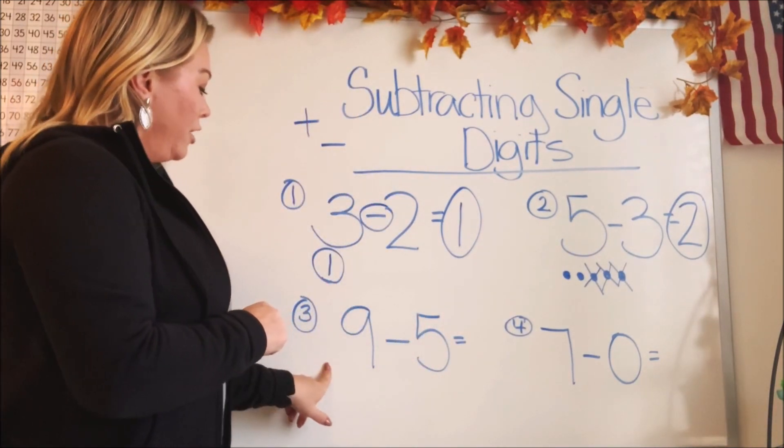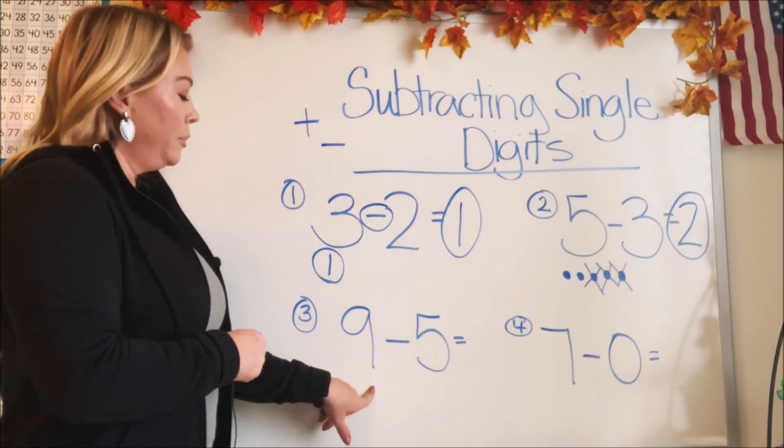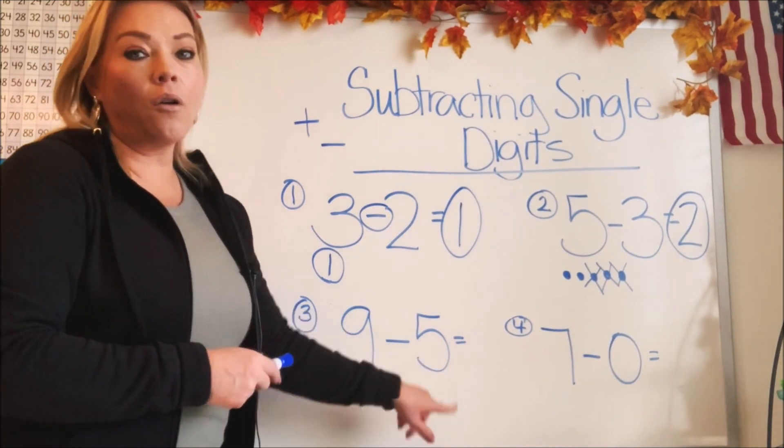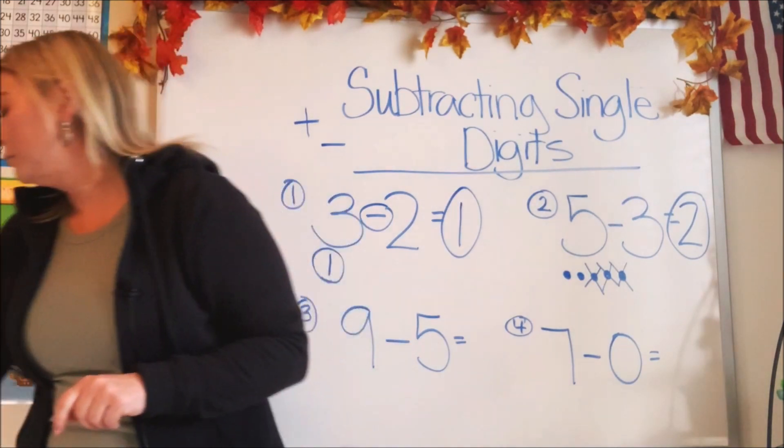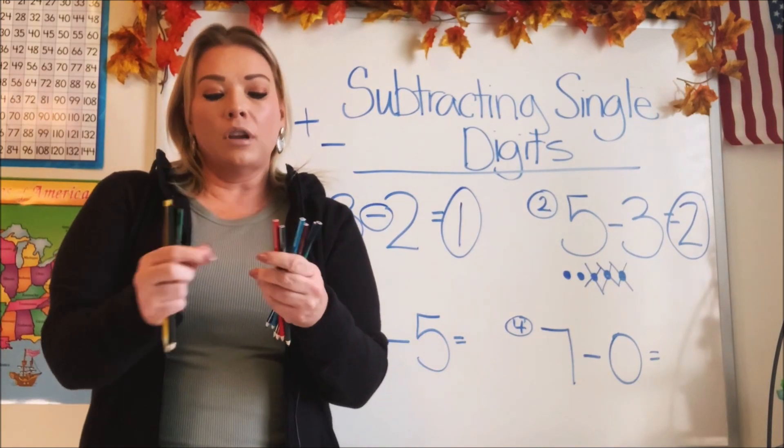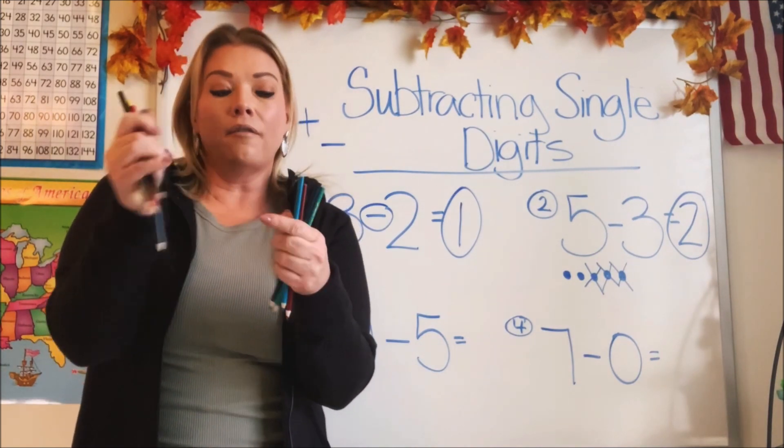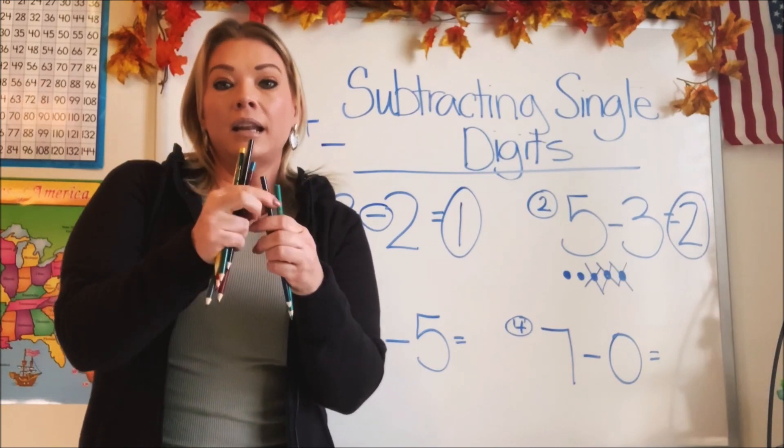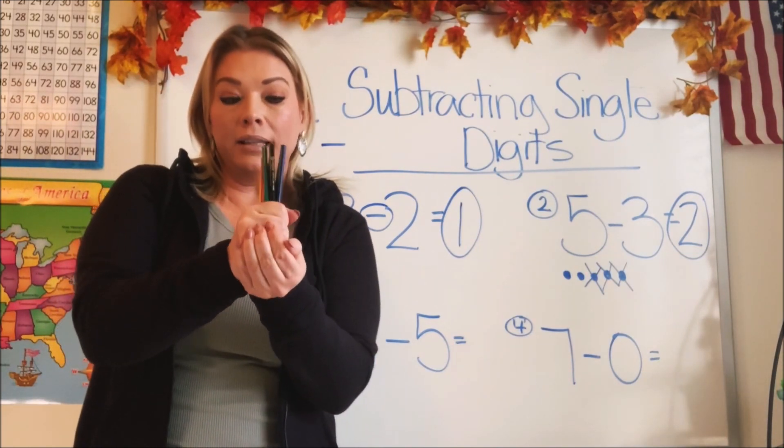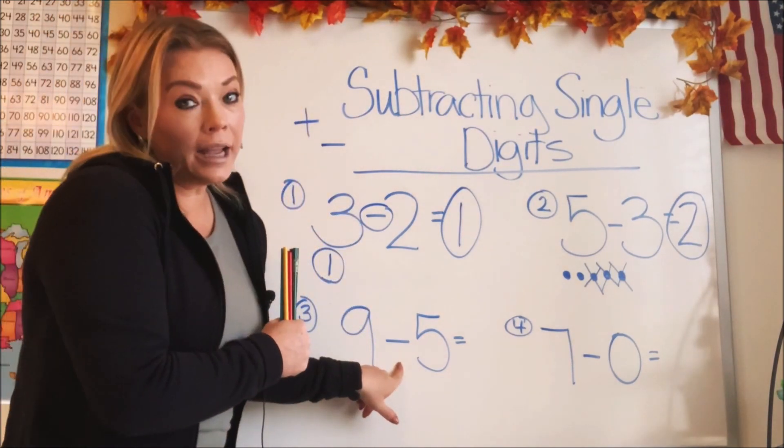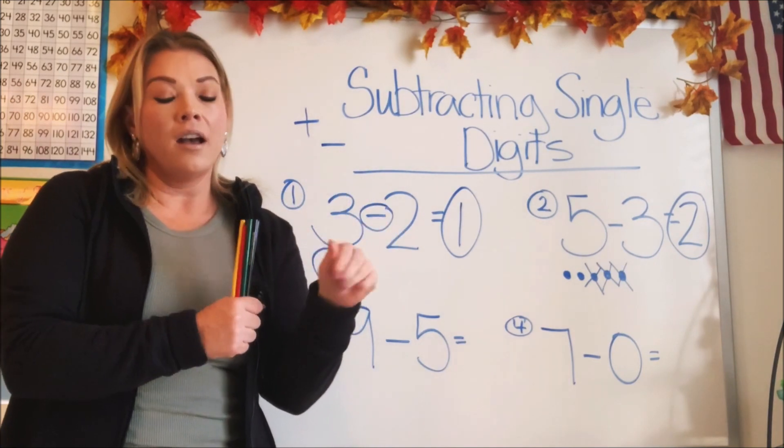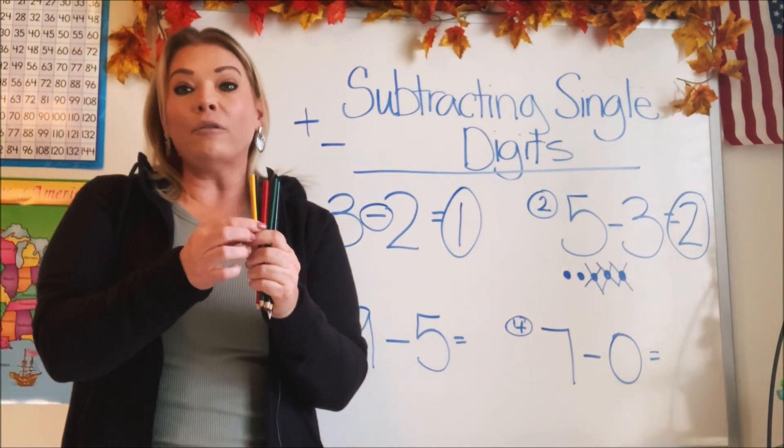Let's come over here to number three. We have nine, that's a big one, minus five. For this one, we're going to use colored pencils. Let's count them out. One, two, three, four, five, six, seven, eight, nine. I have nine colored pencils. And how many are we going to take away? We're going to take away five, aren't we? So let me take five and put them on the table. One, two, three, four, five.